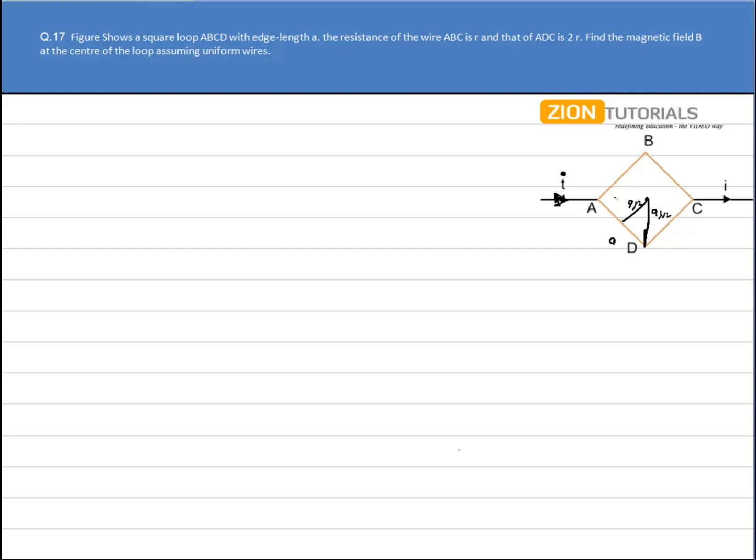We can directly calculate the current flowing through part ABC is I by 3 and the remaining that will flow through ADC, that is 2I by 3. The calculation of current is pretty simple because we studied this chapter earlier, so this current can be easily found out.